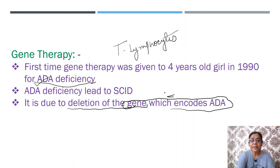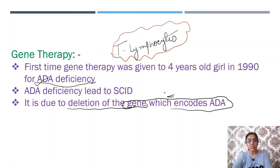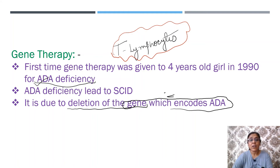ADA is very important for the proliferation of T lymphocytes. T lymphocytes are essential for the immune system to function properly. Due to improper immune function, children are open to bacterial and viral infections. Now we will see the methods of treatment for this disorder.